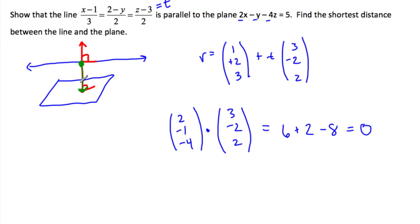So now our line, our new line, that will intersect the plane at a ninety degree angle will be one, two, three, plus t times normal vector, two, minus one, minus four. I need to intersect this line with this plane. So I'm going to substitute in all these values for x, y, and z.